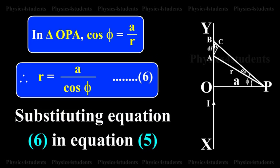In triangle OPA, cos φ equals A by R. Therefore, R equals A by cos φ.